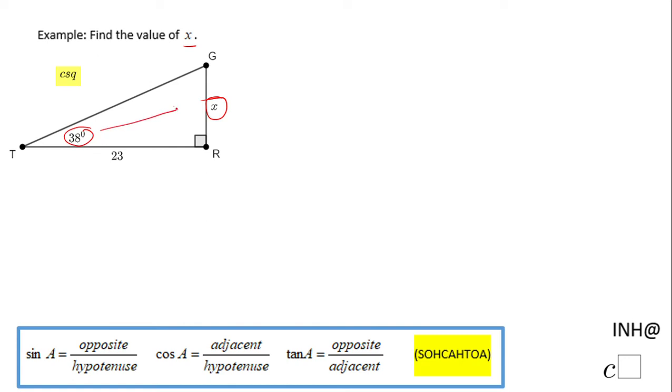If we take a look, this is the angle. This is the opposite leg. If you notice, the other thing that is given besides the angle is this leg which is next to the 38 degree. We call this the adjacent leg.